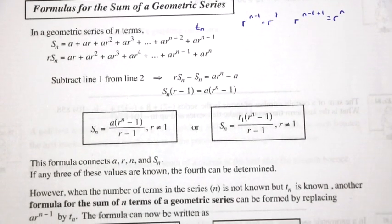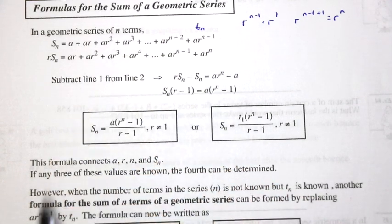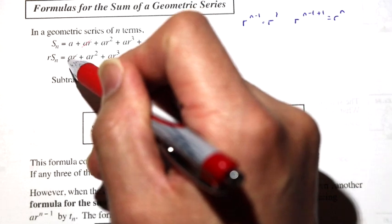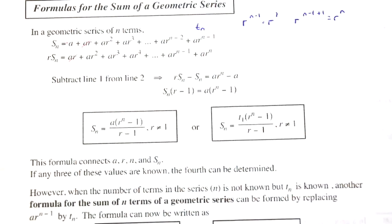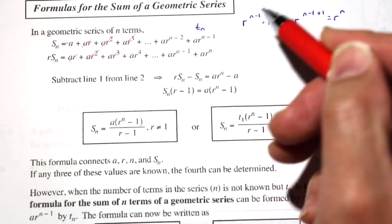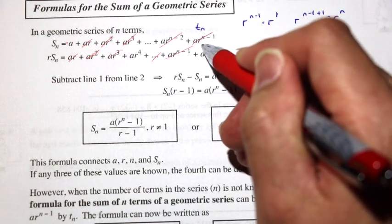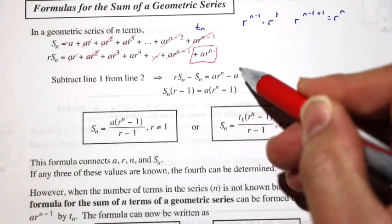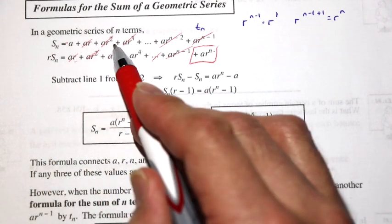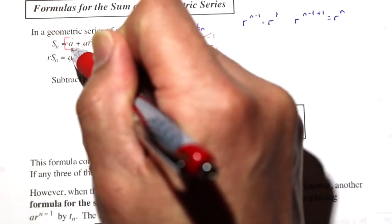If you subtract line 1 from line 2, then you have r times Sn minus Sn. What will happen is this ar term cancels out, ar squared cancels out ar squared, ar cubed cancels out that one, and so on and so forth. The ar to the n minus 1 will cancel that one. So what you'll have left is just ar to the n minus a. For example, ar squared minus ar squared is 0. So you end up with ar to the n minus a.